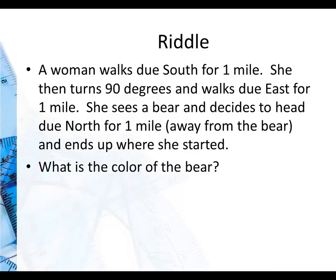Now we have a riddle. A woman walks due south for one mile. She then turns 90 degrees and walks due east for one mile. She sees a bear and decides to head due north for one mile, away from the bear, and ends up where she started. What color is the bear?